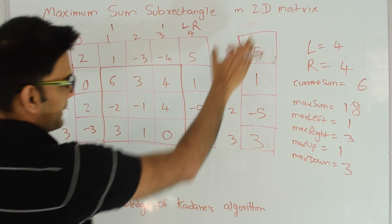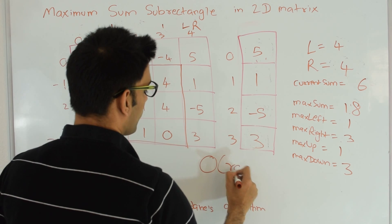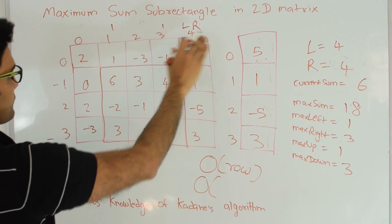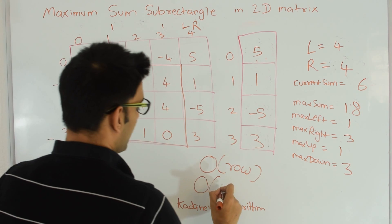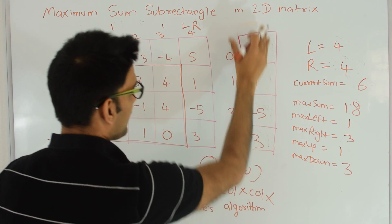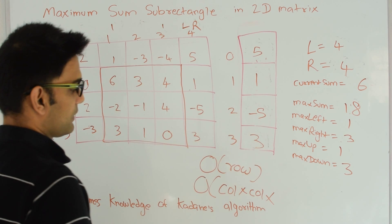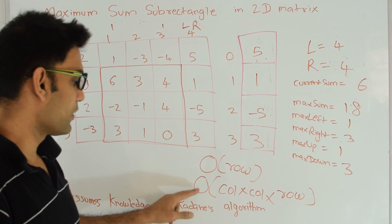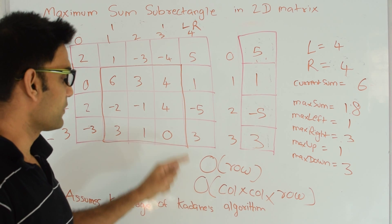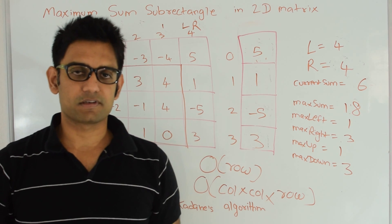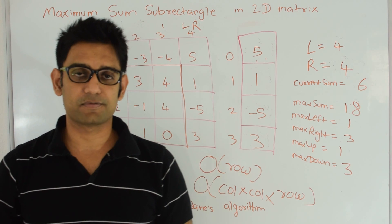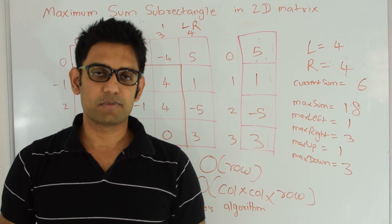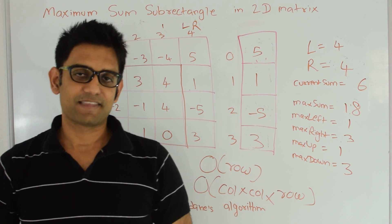The space complexity is O(rows) — just the temporary array. The time complexity: left and right iterate over columns giving O(cols²), and each time we run Kadane's algorithm which is O(rows), so the total time complexity is O(cols² × rows). If you want the code for this algorithm, it's linked in the description. You can also check out my GitHub at github.com/mission-peace/interview-wiki and follow me on YouTube at youtube.com/user/tusharoy2525. Thanks for watching!